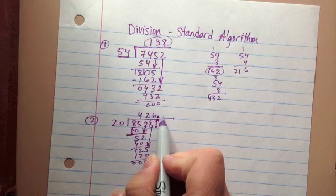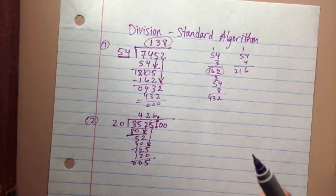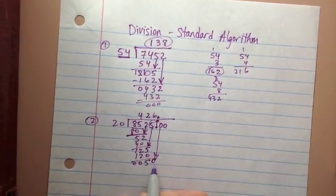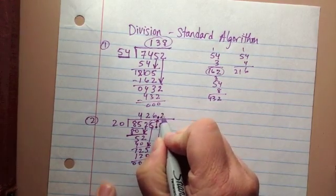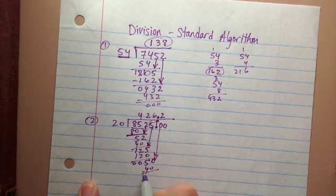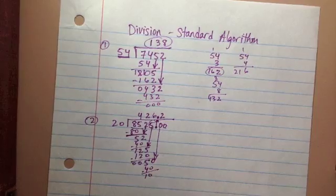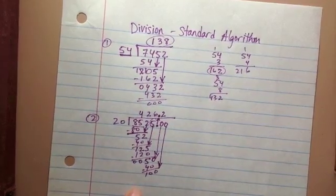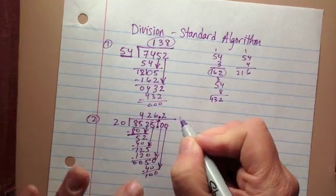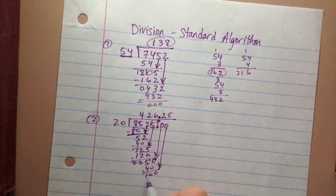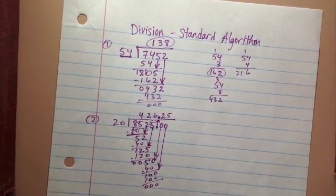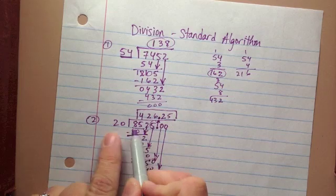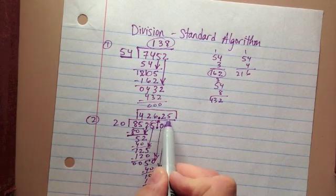If I put a decimal point here and start bringing down zeros to continue division, I need to make sure that decimal point also goes up into the answer. That's very important — all the digits I place up there need to show that I'm looking at part of a number, not a whole unit anymore. I bring down a zero, making this 50. How many times does 20 go into 50? That's 2 times. 2 times 20 is 40. 50 minus 40 is 10. I still have some left over, so I bring down another zero — giving 100. How many times does 20 go into 100? 20, 40, 60, 80, 100 — that's 5 times. 5 times 20 is 100, leaving zero. I've arrived at a final answer: 8,525 divided by 20 equals 426.25. That 0.25 is not a full unit — it's part of a unit left over.